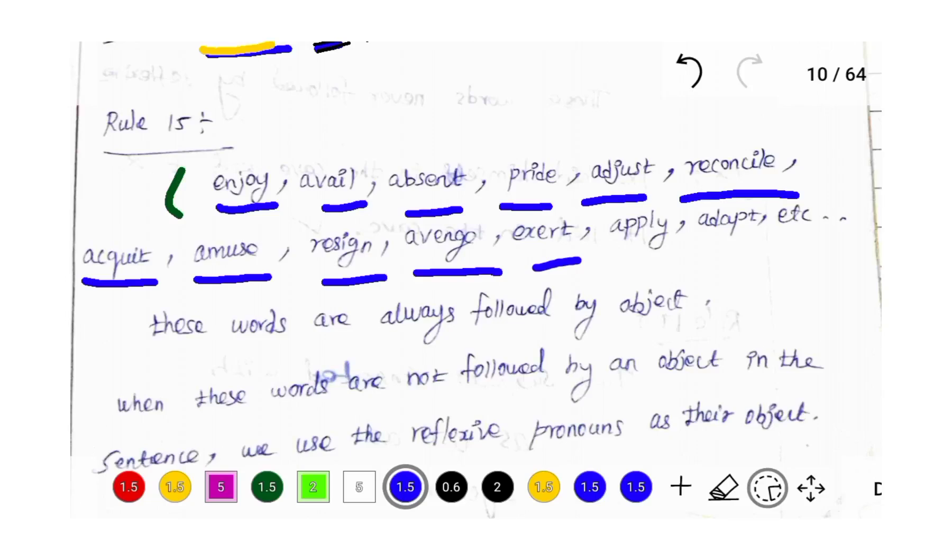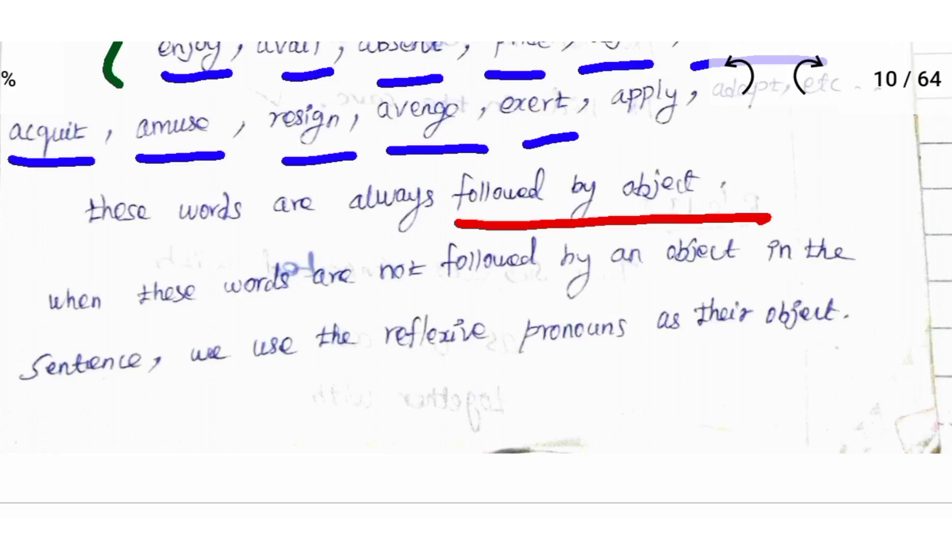Rule Number 15 says there are certain words that are always followed by object. If these words are not followed by an object in the sentence, we use the reflexive pronouns as their object.